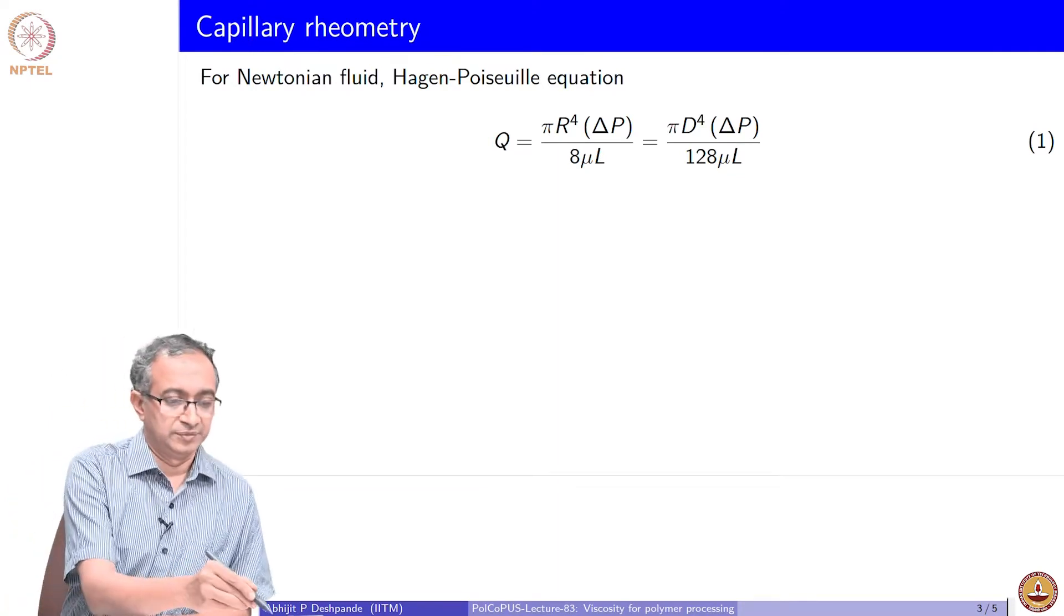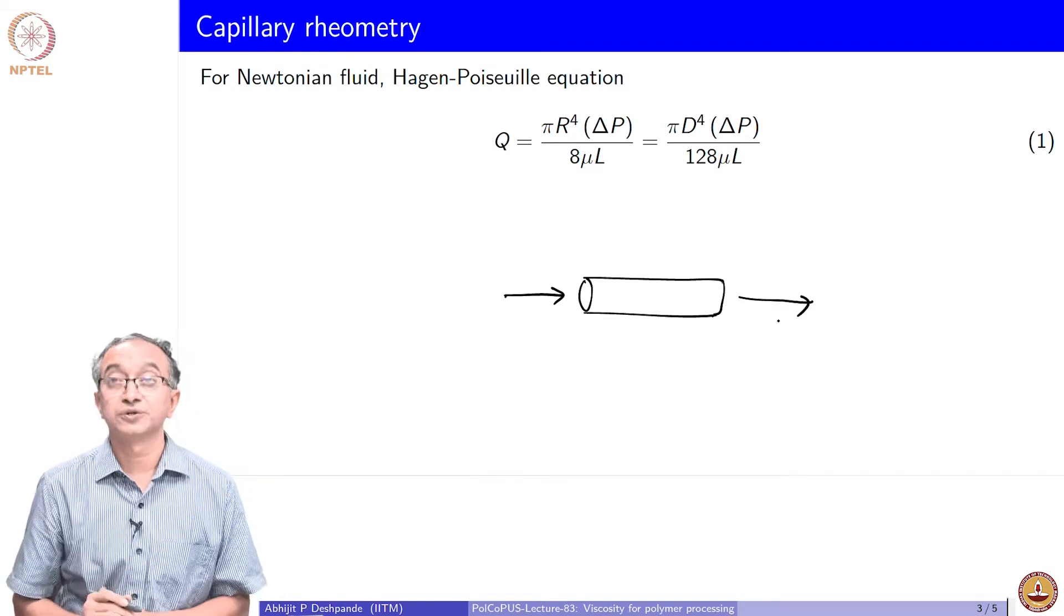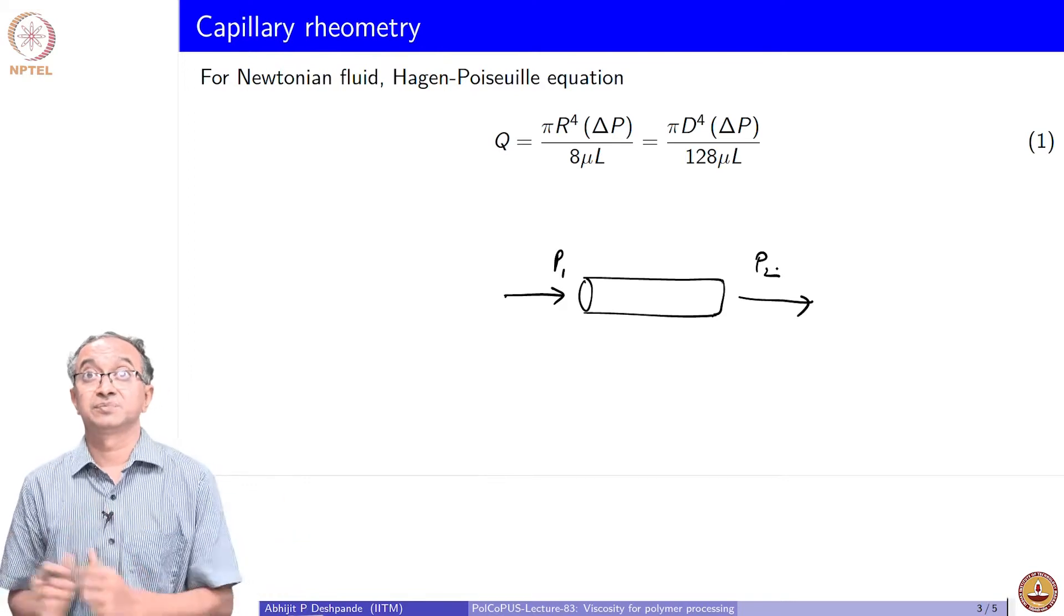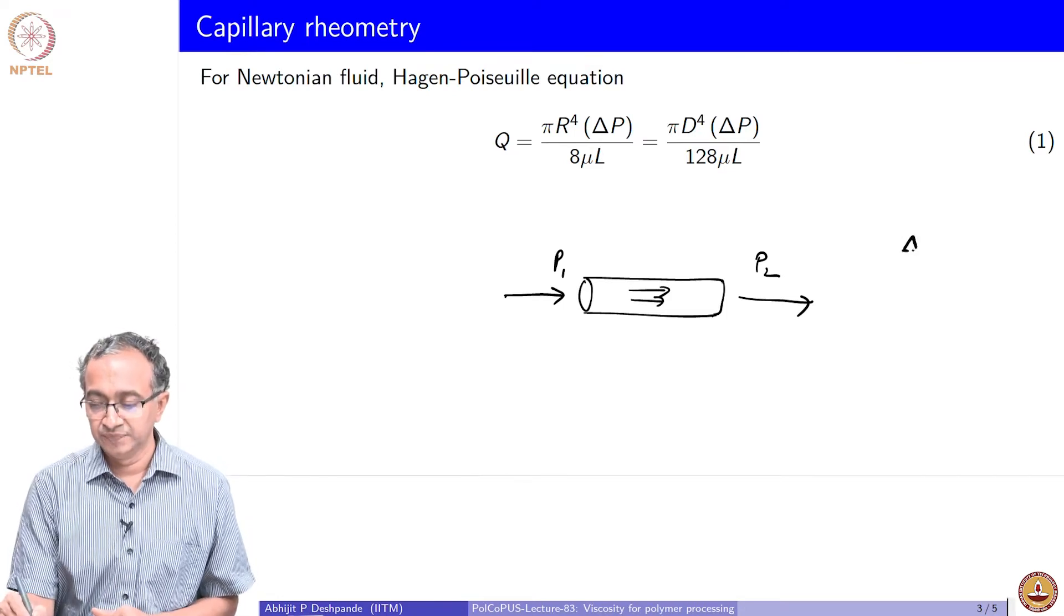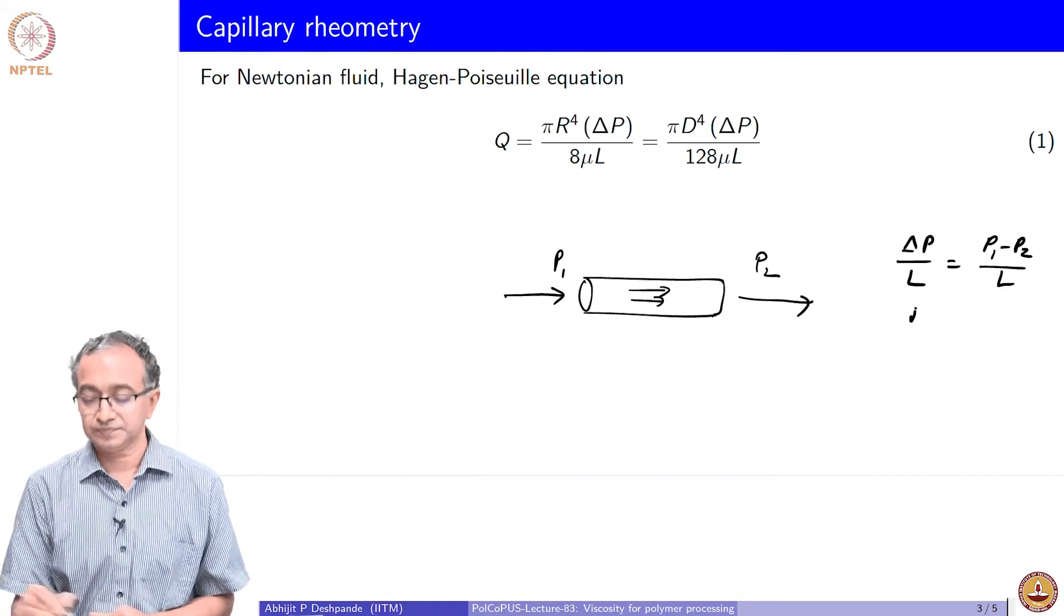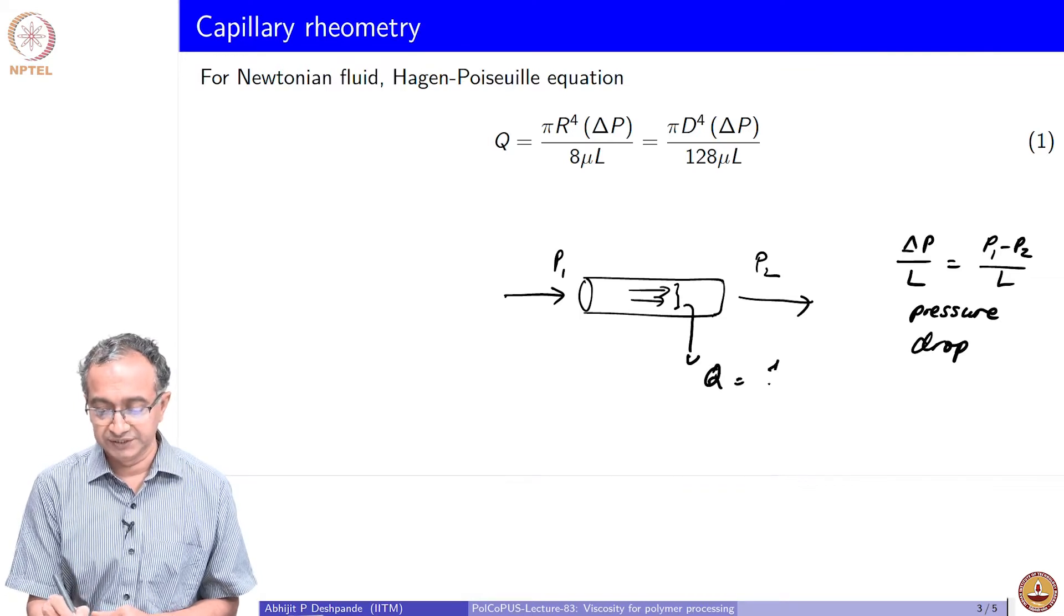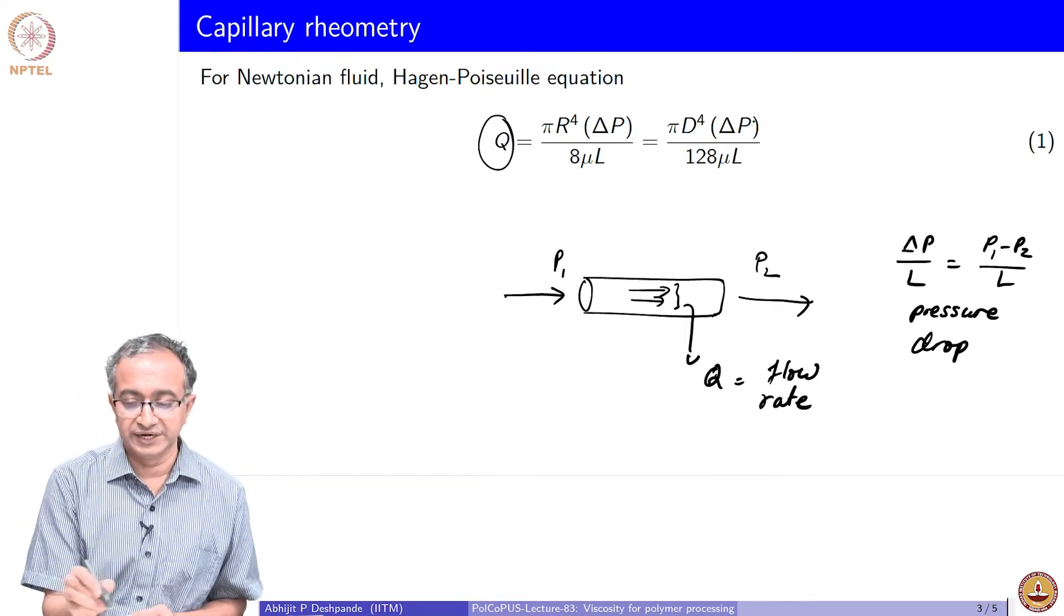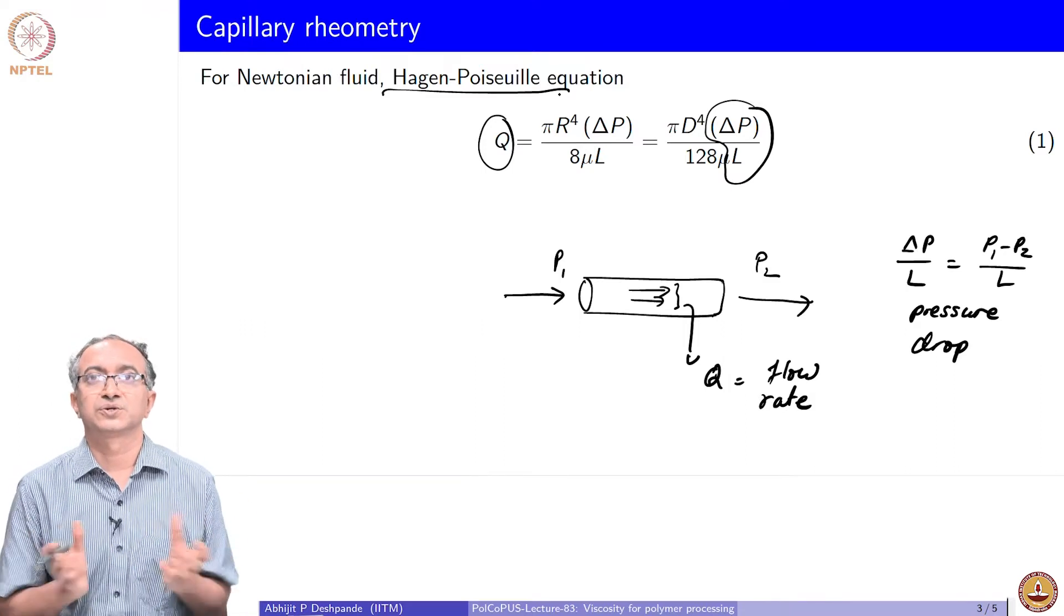Capillary rheometry is basically taking the fluid in a capillary or tube and forcing it to flow through using a pump or any other arrangement. The pressure at the entry is higher than the pressure at outlet and so fluid gets pushed through. Delta P by L or P1 minus P2 by L is the pressure drop. We can measure the amount of fluid through the flow rate. If this were to be a Newtonian fluid then the relation between the flow rate and delta P by L is well known through the Hagen-Poiseuille equation which is studied in the first course on fluid mechanics.